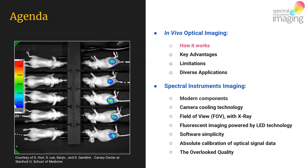So, in vivo optical imaging — how does it work? When it's working well, this is what it can look like. We have a 25 by 25 centimeter square field of view in one of our Spectral Instruments Imaging LAGO systems, and we are imaging 10 mice and capturing optical data from five of them. This optical data is basically the capture of light photons by the imaging camera system.